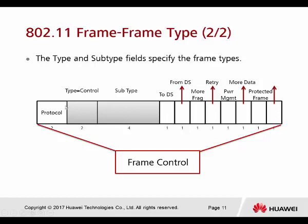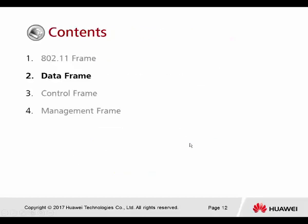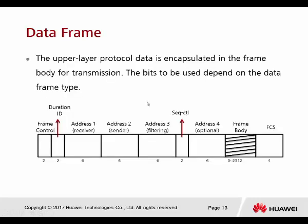Here is the complete frame format recap. We already discussed frame control. Now we're going to cover the data frame. The upper layer protocol data is encapsulated in the frame body for transmission. The bits used depend on the data frame type.